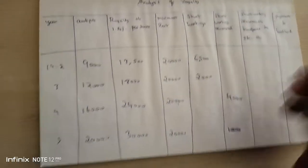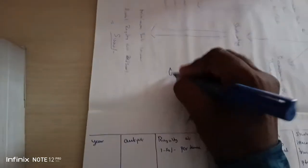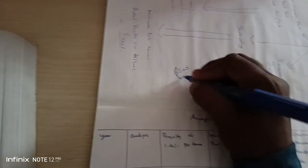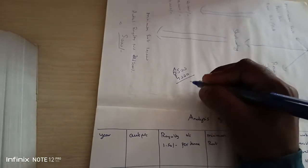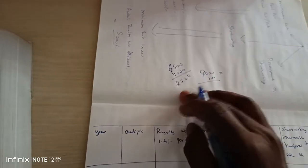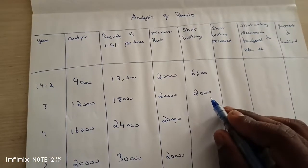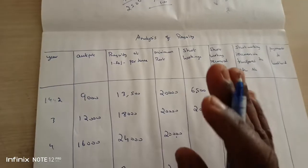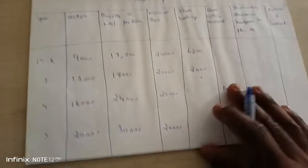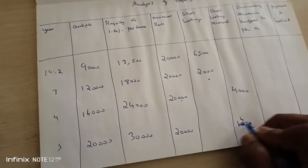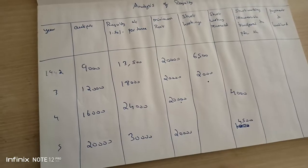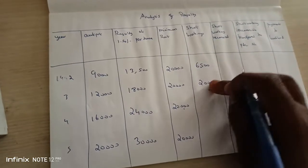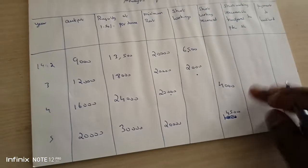In Year 3 we have Rs. 4,000 extra. We have Rs. 6,500 short working to recoup. We take Rs. 4,000 as recoupment in Year 3, leaving Rs. 2,500 still unrecouped. In Year 4, royalty is Rs. 30,000 — Rs. 10,000 extra over minimum rent — so we can recoup the remaining Rs. 2,500 short working. After that, the short working balance is cleared.